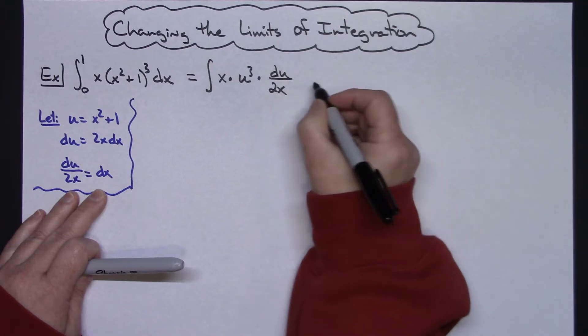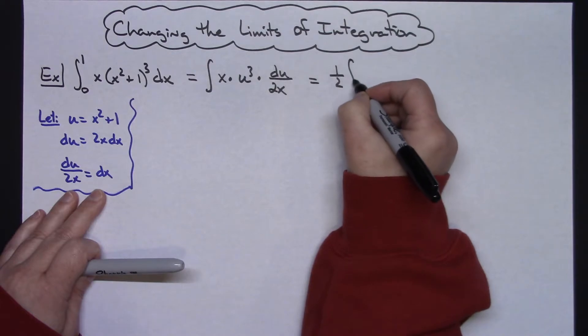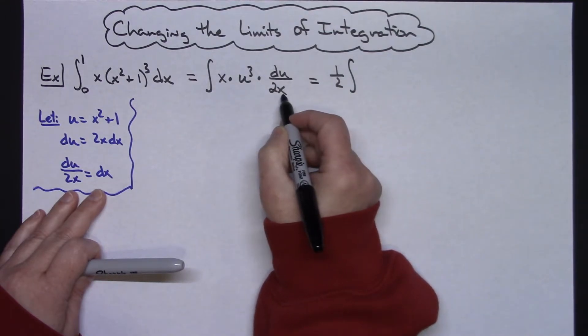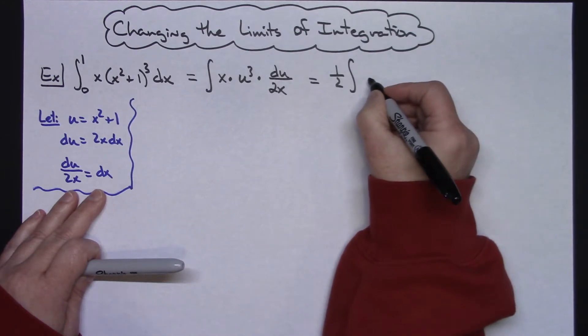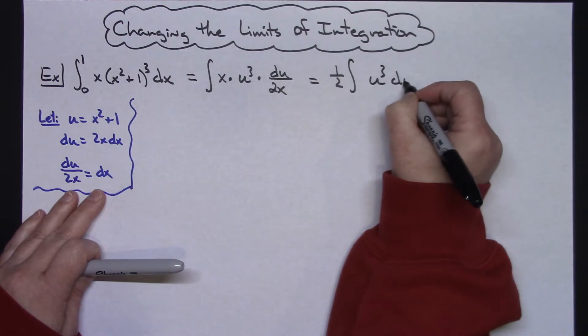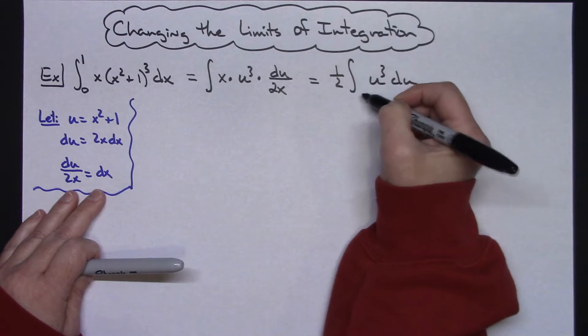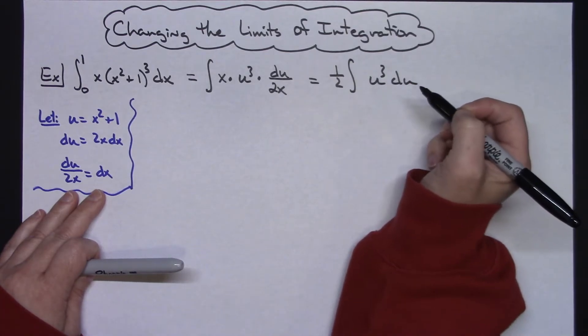Now at this point when I go to my next step, obviously I'm going to pull out that one half right there. And the x's are going to cross out, it's going to leave me with a u to the third du. But it's at this point right here, that I would really like to have different limits right here, different limits of integration. I want limits of integration in terms of u.